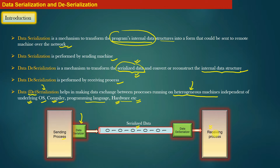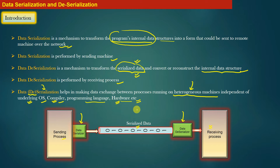Before the receiving process actually starts processing the serialized data, it needs to be processed by the data deserializer running on the receiving machine. The job of this data deserializer is to reconstruct the original data structures from this serialized data. The end result is that the sending process can send its internal data to the receiving process, independent of underlying operating systems, compilers, programming languages, hardware, and more.